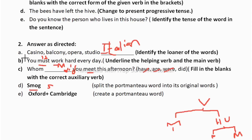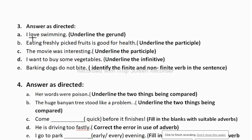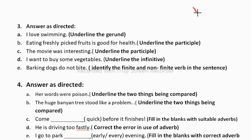If you do all 5 bits in question 2 you will get 5 marks. Now in question 3: 'I love swimming — underline the gerund.' Verbs are of 20 to 25 types: weak, strong, irregular, regular, principal, transitive, intransitive, finite, and non-finite verbs. Non-finite verbs include gerund, present participle, past participle, and infinitives.